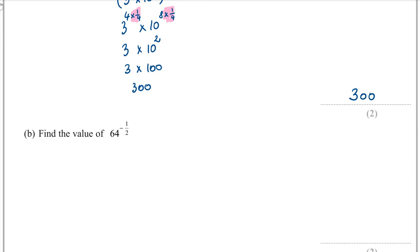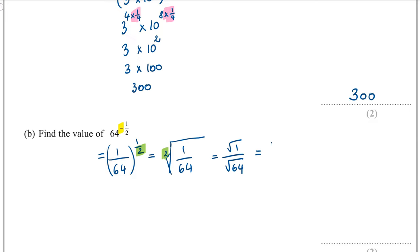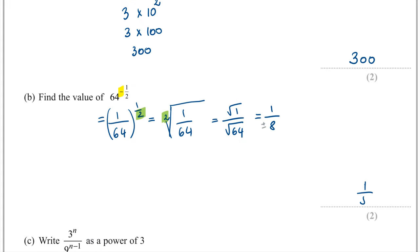Part B. Find the value of 64 to the power of minus one half. A negative power gives the reciprocal, so this equals 1 over 64 to the power of one half. The power of one half means square root. The square root of 1 over 64 equals 1 over 8. These exam questions typically require only the positive answer, though theoretically the answer is plus or minus 1 over 8.